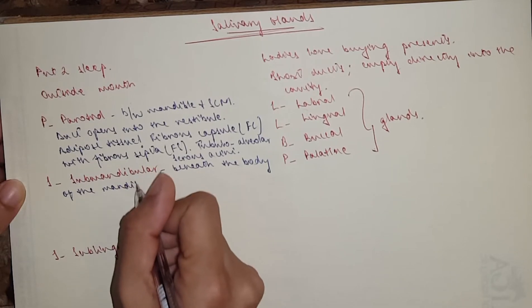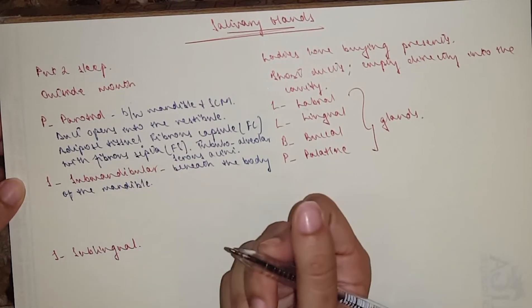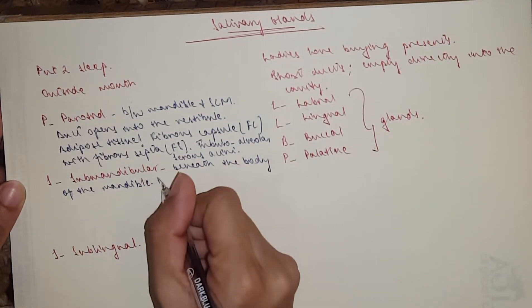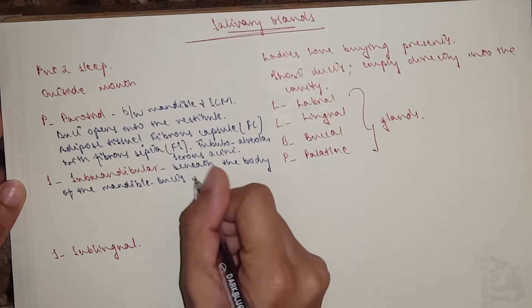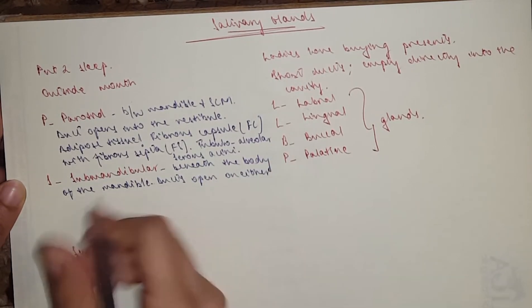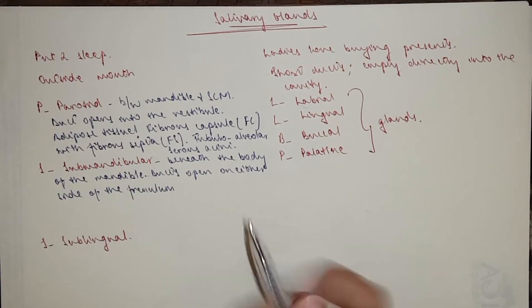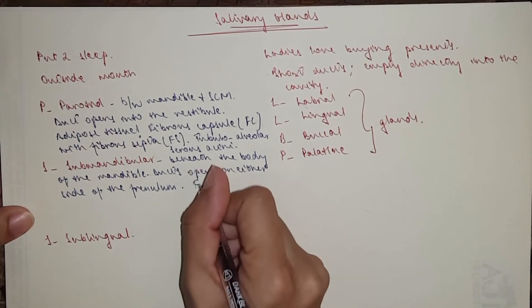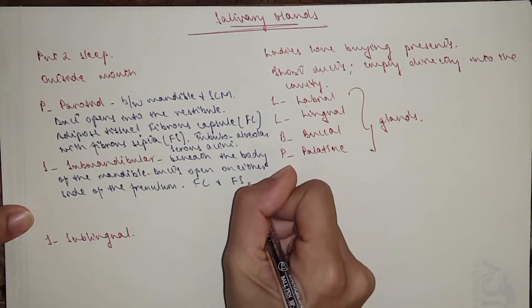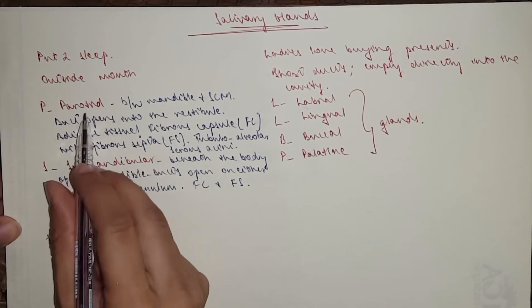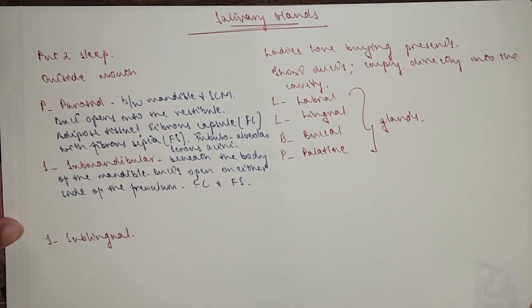The ducts extend forward to open into the mouth cavity on either side of the frenulum of the tongue. So ducts open on either side of the frenulum, so it's just behind the lower incisor teeth. It's got a fibrous capsule, so I'm going to write FC, and fibrous septa, FS, which divide it into lobules. There is no adipose tissue, so I'm only going to write adipose tissue for the parotid. That's the difference.